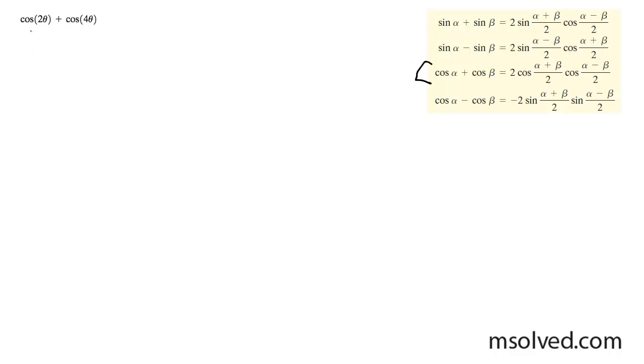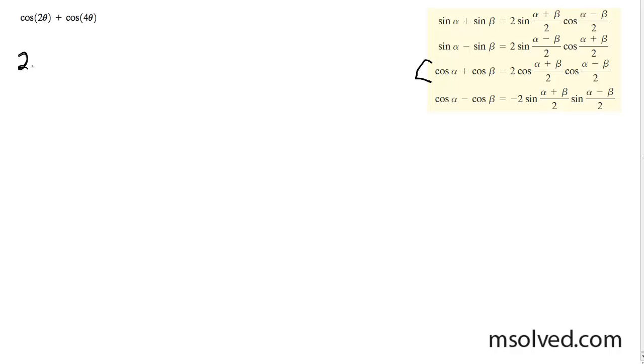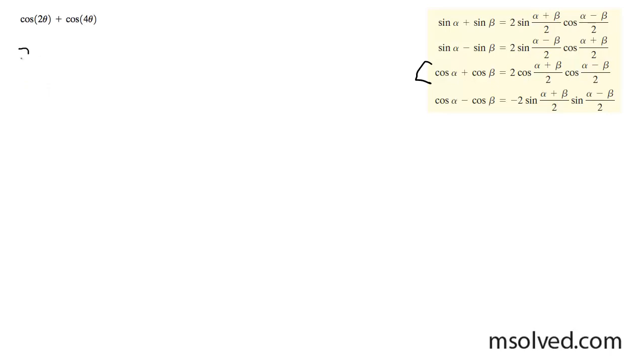What I'm going to do here is rewrite this as 2 cos alpha plus beta divided by 2 and cos alpha minus beta divided by 2.